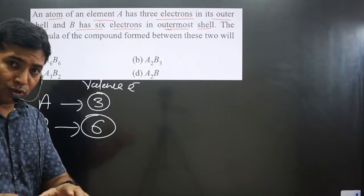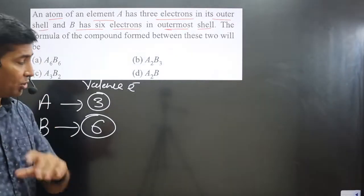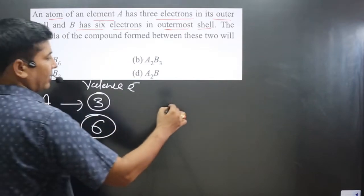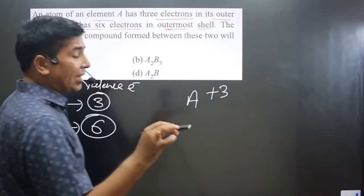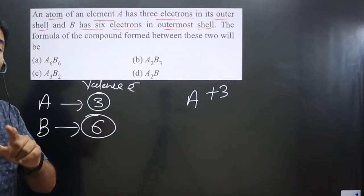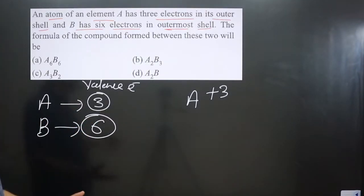And when they have tendency to lose three electrons, they will carry plus three charge. From here we are able to determine A will carry plus three charge because it has tendency to lose three electrons to be in stable state. Its octet will be complete.